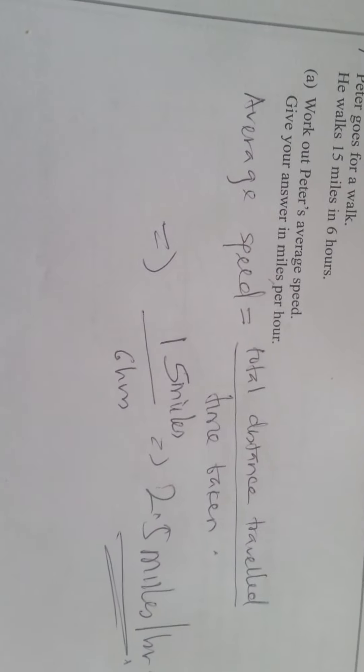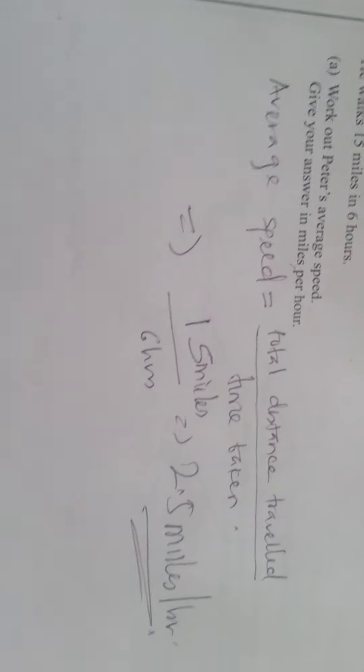Average speed is just total distance traveled divided by total time taken. So we just put the values there and that's your answer.